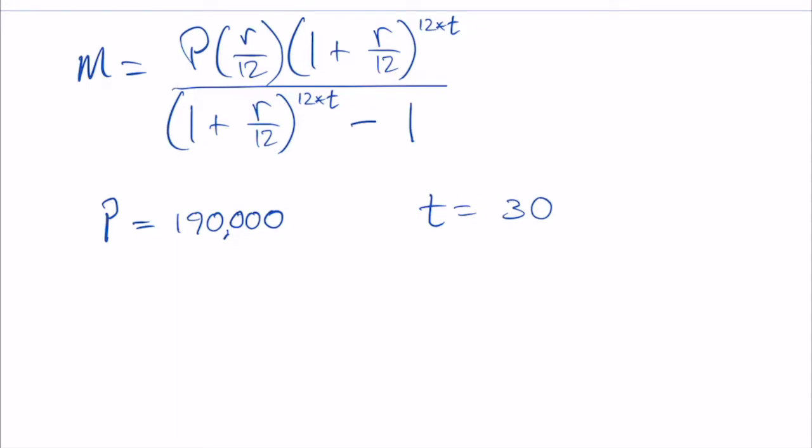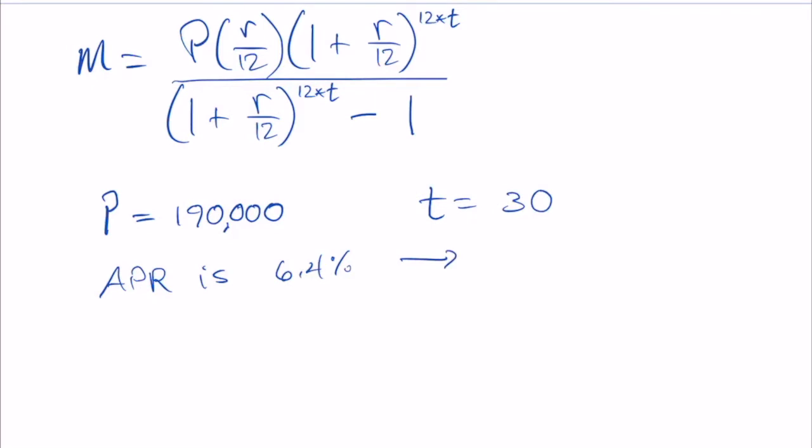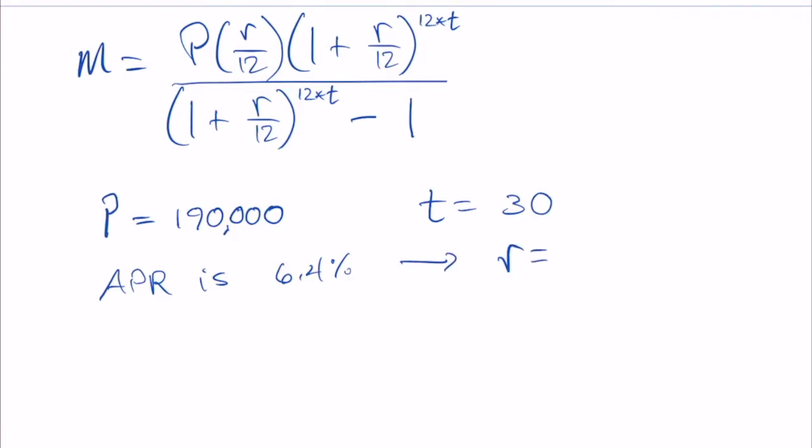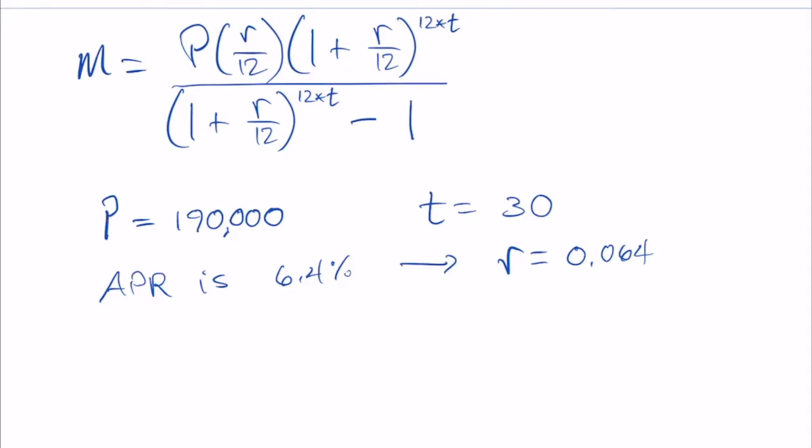And then the APR is 6.4%. That means then that that's our rate. The rate is equal to 0.064 because you know how to convert an expression of percent into a decimal. Those are all the pieces that we need.